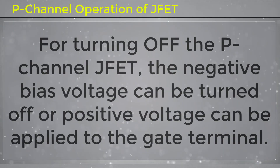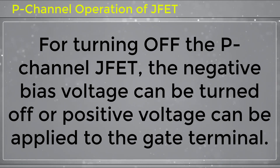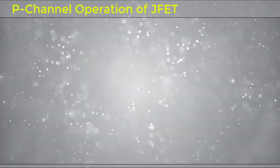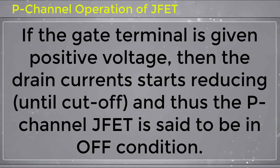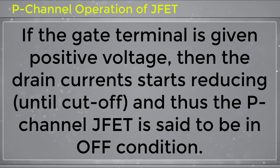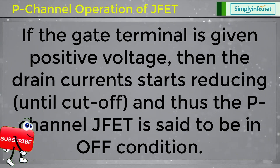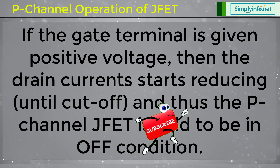For turning off the P-channel JFET, the negative bias voltage can be turned off, or a positive voltage can be applied to the gate terminal. If the gate terminal is given a positive voltage, the drain current starts reducing until cut-off, and the P-channel JFET is said to be in the OFF condition.